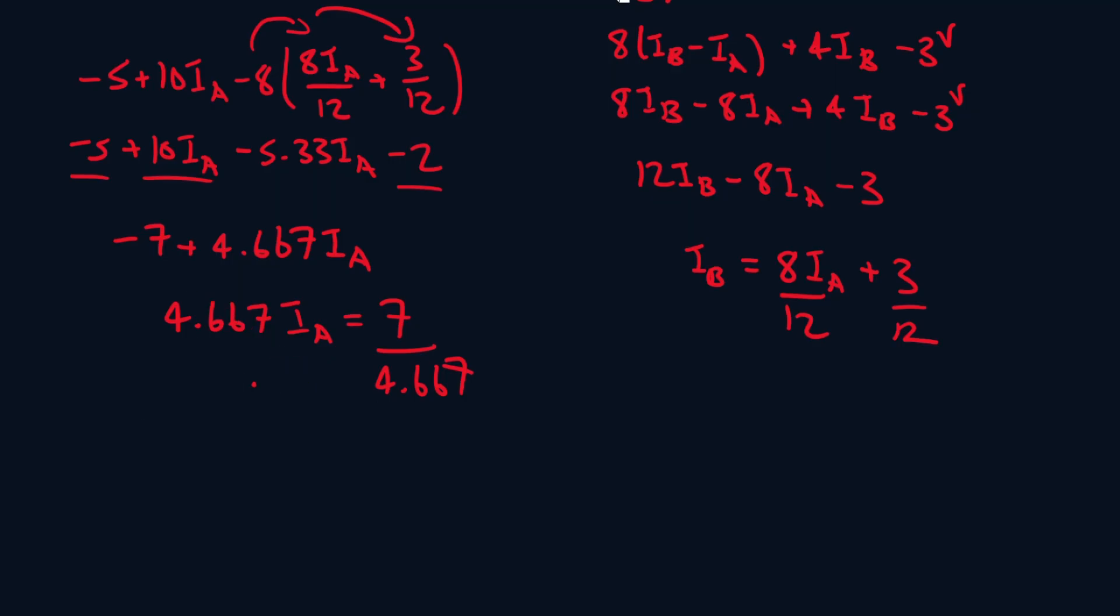These two cancel out. So IA is equal to, hold on, let me use a calculator quickly. 1.5 amps. Now we can substitute that into here. So it will be 1.5 times 8 divided by 12, which is 1, plus 3 over 12, which is 1.25 amps.